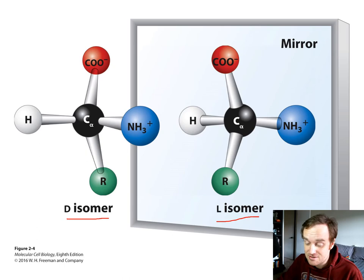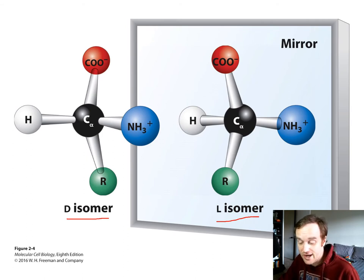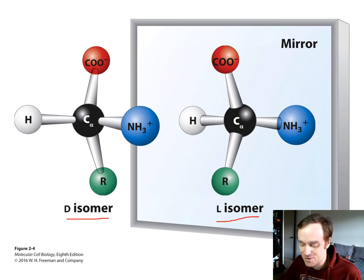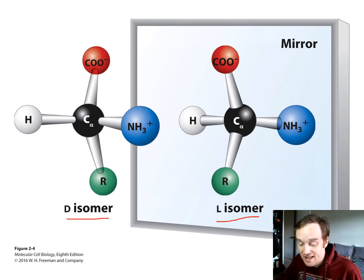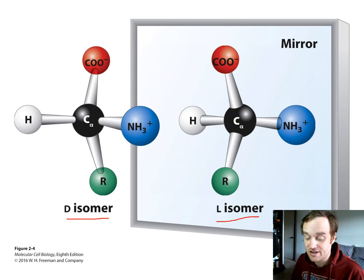For those of you going into the medical field, drug stereoisomers have different properties, potencies, and effects. Darvon is a pain reliever, but its stereoisomer Novrad — which is Darvon spelled backwards — is a cough suppressant. They are the same chemical structure but with different stereochemistry; one acts as a pain reliever and one as a cough suppressant.